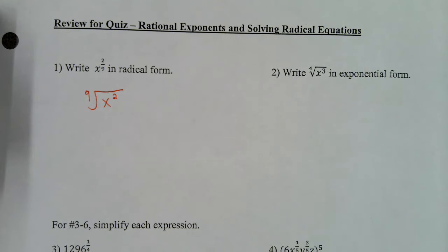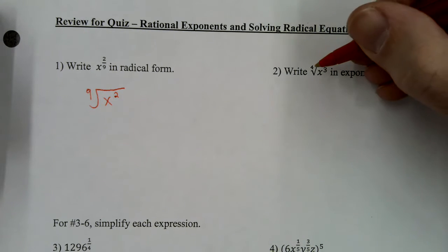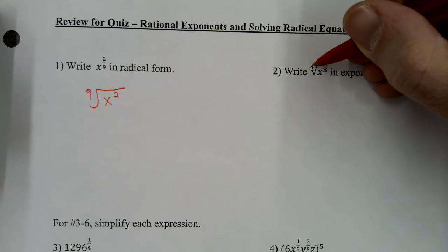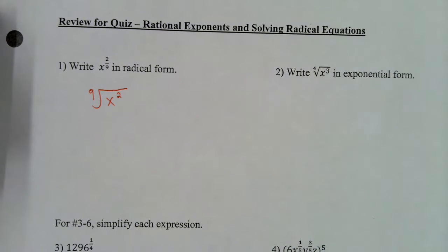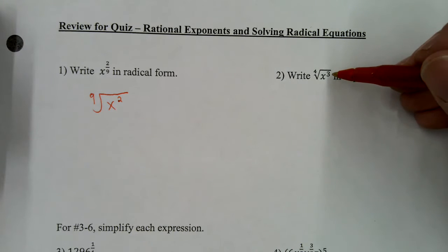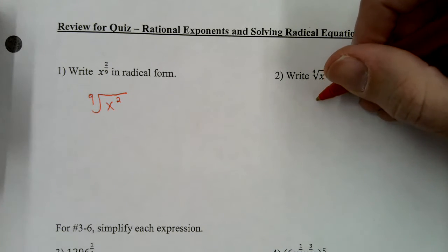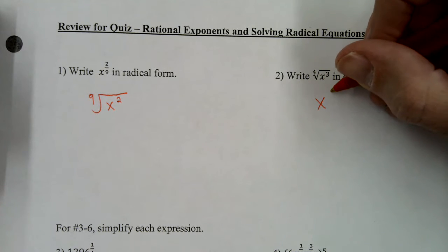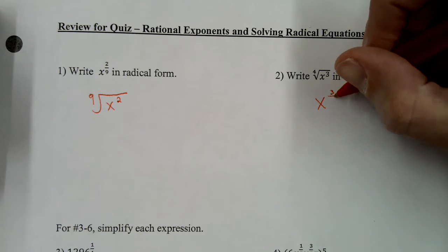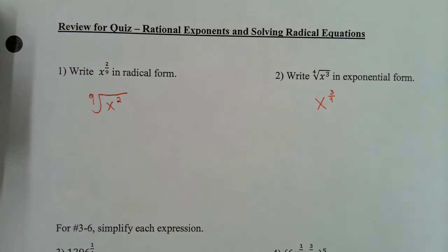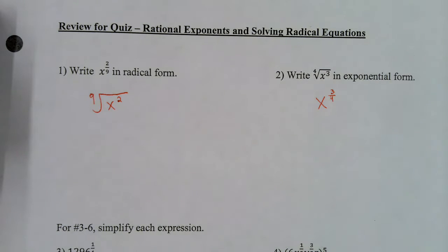Number two, write the fourth root of x cubed in exponential form. The index is the denominator, and that number will be the numerator. If there's no number there, you just put a one. But in this case it's a three, so it's going to be x to the three-fourths power. Also keep in mind, if there's no index, then the index is implied to be a two.